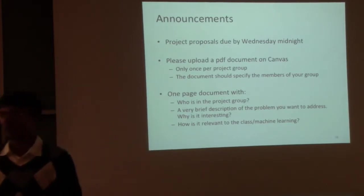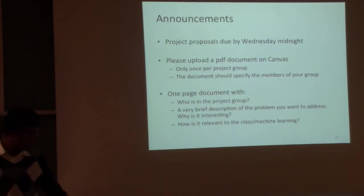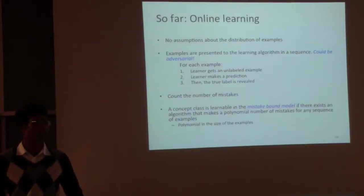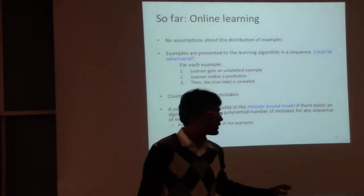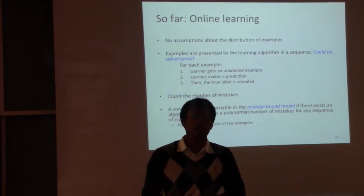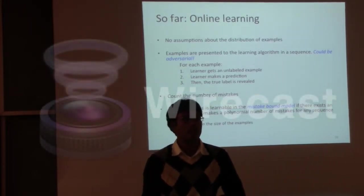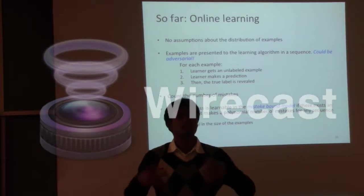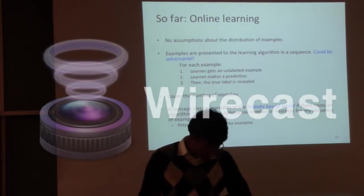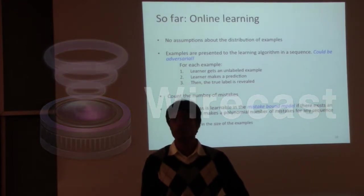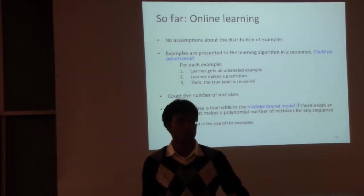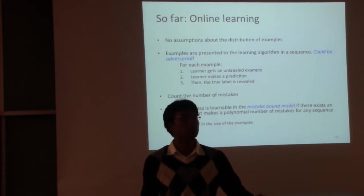So, let's get back to where we were. In the last lecture, we started looking at online learning, and in particular we were looking at a specific model called mistake-bound learning. The general idea in online learning is that you don't make any assumptions about the distribution of the inputs and outputs.